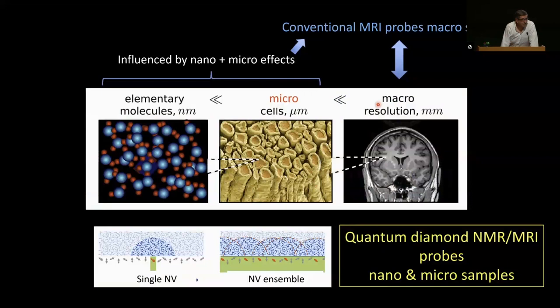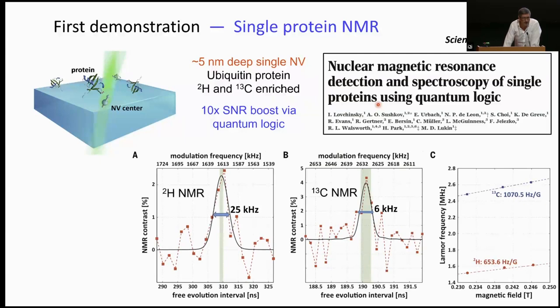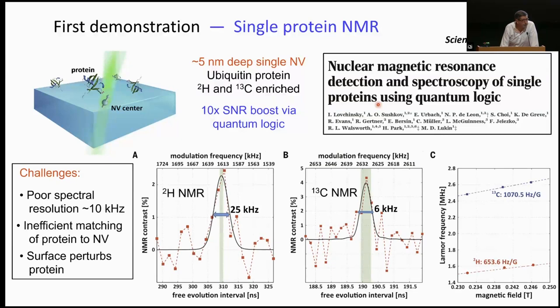So now let's get to the main topic, which is using these NVs to do NMR and MRI probes, small samples. Let me give you a quick overview of what's been accomplished over the last, not quite a decade. First demonstration that might interest you was back in 2016 published in Science. We used a single shallow NV to detect the NMR signal from an individual protein. It's the only technology I think that's ever done single protein NMR. There was a key 10x SNR boost via quantum logic.